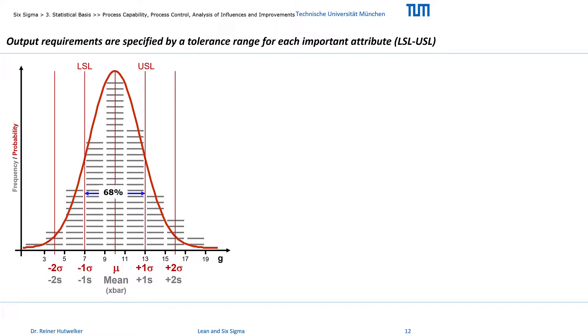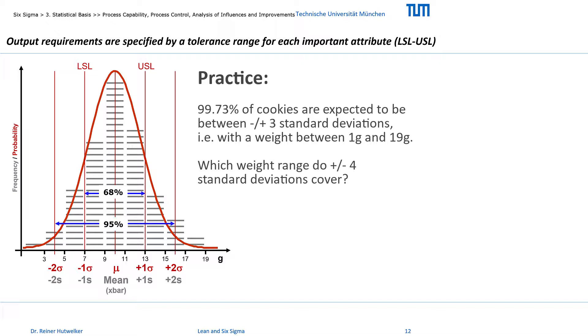You probably also remember that the area between minus 2 and plus 2 standard deviations covers about 95% of the cases and 99.73% of our cookies fall between minus 3 and plus 3 standard deviations.